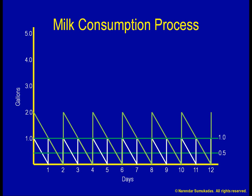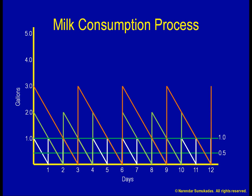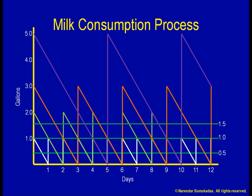If I increase my shopping cycle to once in three days, I purchase three gallons at a time. I start my three-day cycle with three gallons and end with zero, so on average I have one and a half gallons of inventory. And so on. The larger the inventory cycle, the larger the amount of cycle inventory.